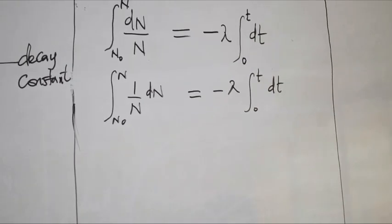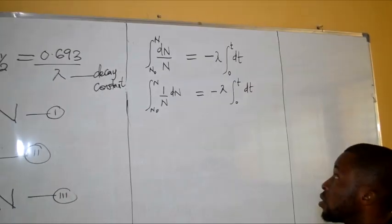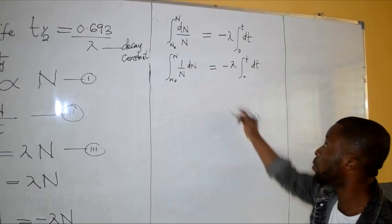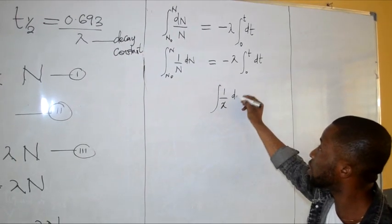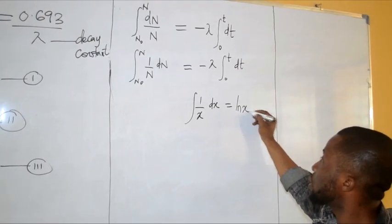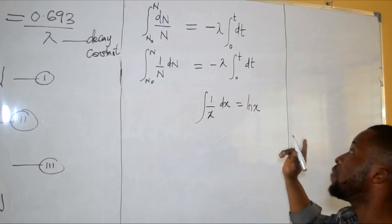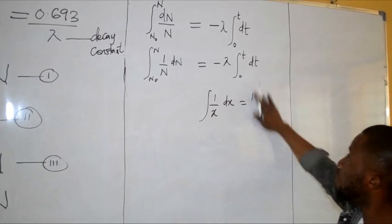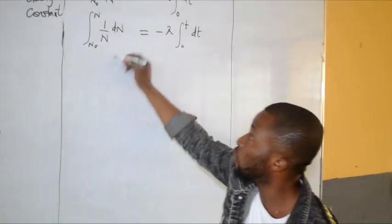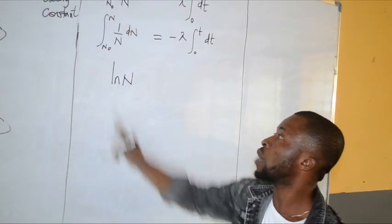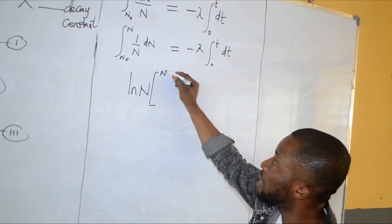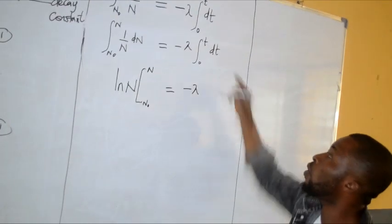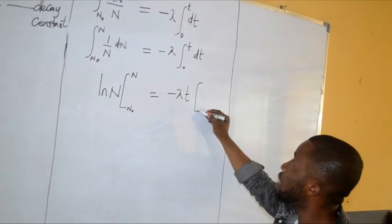As we know from calculus, the integral of 1 over N with respect to N gives the natural log of that variable. So we have ln N evaluated from N-naught to N, equal to negative lambda, and of course the integral of dt gives you t, evaluated with the limit values.